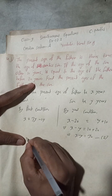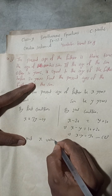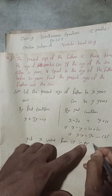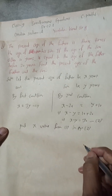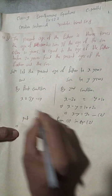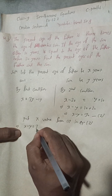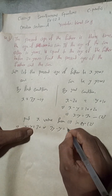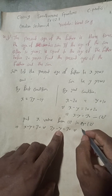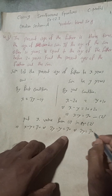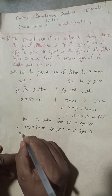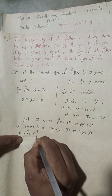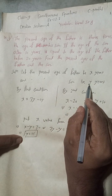Now put the value of x from equation 1 into equation 2. So x − y = 30 becomes 3y − y = 30. So 3y − 1y gives us 2y = 30, which implies y = 30 ÷ 2 = 15 years. So we got the son's age: 15 years.